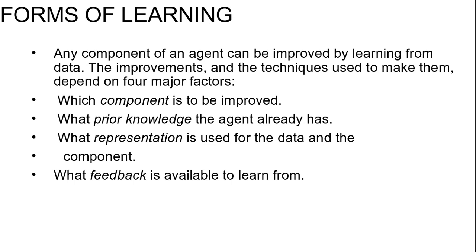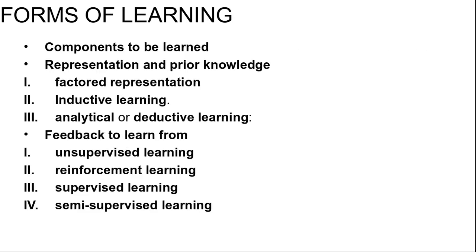First, which component is to be improved. Second, what prior knowledge the agent already has. Third, what representation is used for the data and the component. Fourth, what feedback is available to learn from. Let's start with components to be learned. The components of agents include: